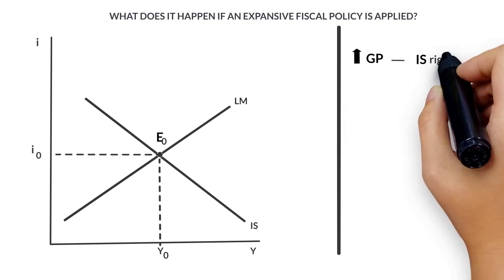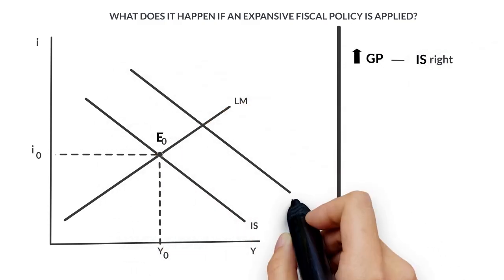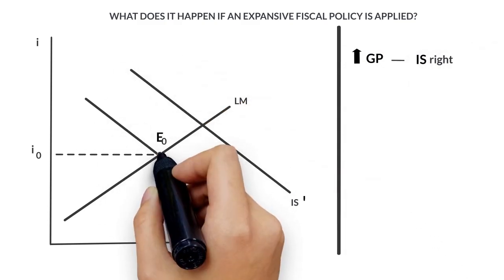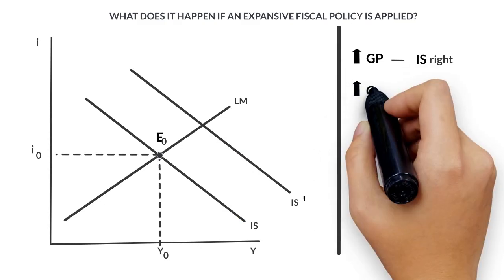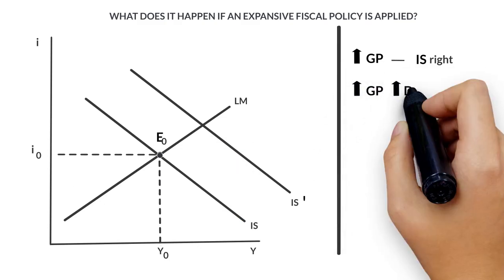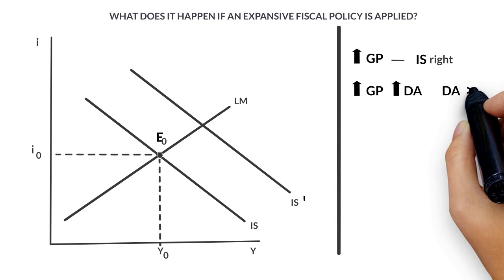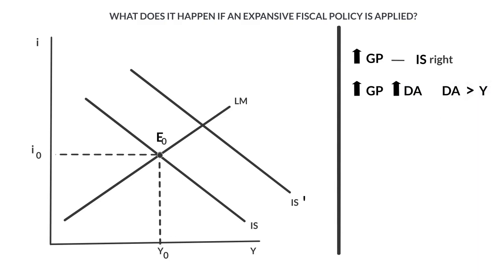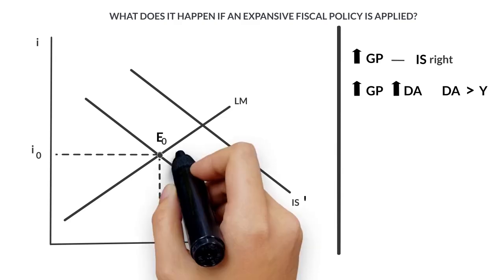In this case, the point E0 is no longer an equilibrium point in the goods market, since the increase in expenditure has led to an increase in the aggregated demand, and this will be higher than the income level.